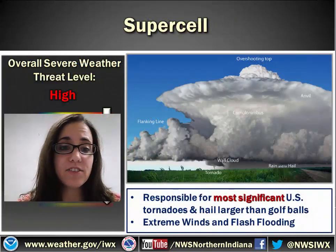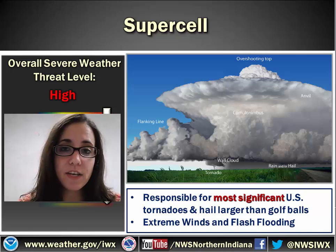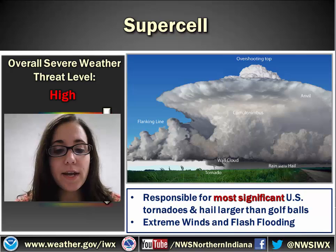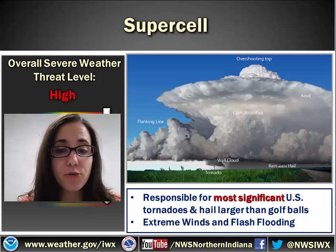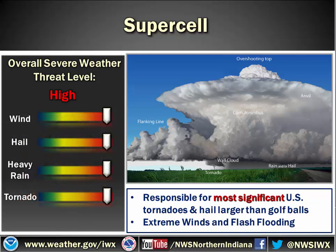Last but certainly not least is the supercell. These are responsible for the most significant U.S. tornadoes — the EF4s and EF5s — and hail larger than golf balls. Generally when we have a supercell situation, the threat is high for all types of severe weather, especially tornadoes, heavy rain, hail, wind, and flash flooding. I will note that typically we don't see these as clearly in northern Indiana, Michigan, and the Great Lakes states — it's typically a little messier looking. But you should still be able to identify them, because we do get them occasionally.